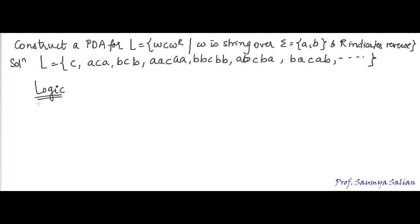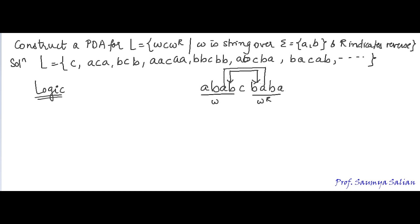Now let's understand the logic. Considering this string: this is my W part, C is a separator, and this is my W^R part. We have already seen that the last symbol of W will match with the first symbol of W^R, and the second last symbol of W will match with the second symbol of W^R. So how do we construct a PDA?